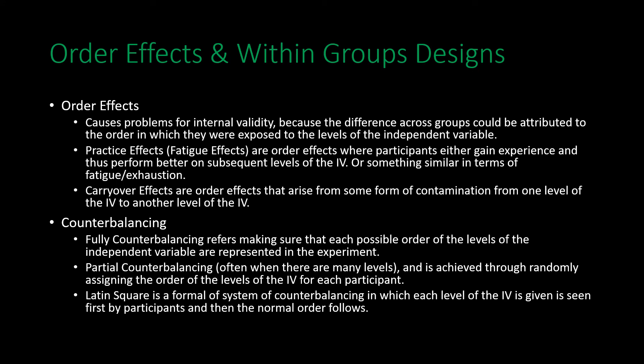A form you're likely to hear in counterbalancing is something called a Latin square. Essentially, you take the order of your experiment — say with six levels — and ensure that each level occupies the first position at least once, then continue counting down sequentially. For example, the first order might be 1-2-3-4-5-6; the second starts with 2, giving 2-3-4-5-6-1; another could start with 5, giving 5-6-1-2-3-4. In this way, each level occupies the first position while the sequential order remains consistent.